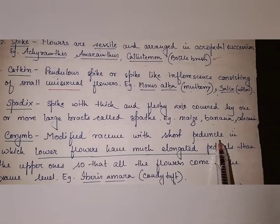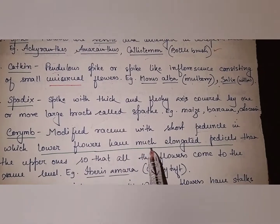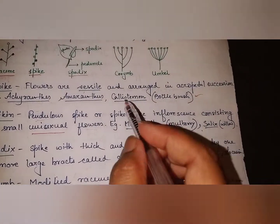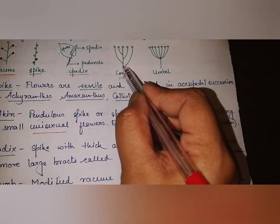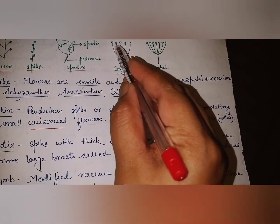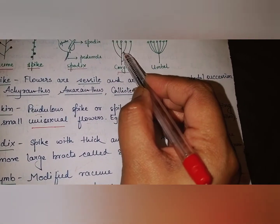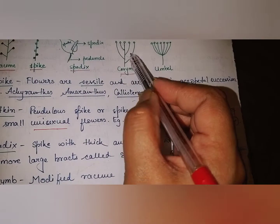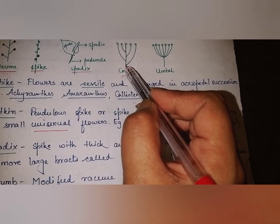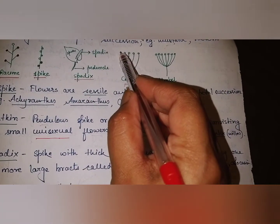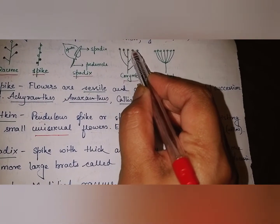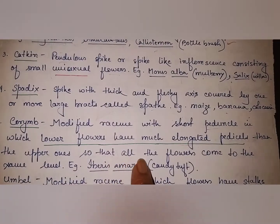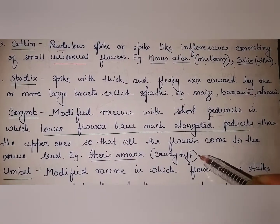Next is corymb: it is a modified raceme with a short peduncle in which the lower flowers have much elongated pedicels. The lower flowers have longer pedicels, and as you go higher the pedicels get shorter, but all the flowers end up at the same level. It is found in Candytuft (Iberis amara).